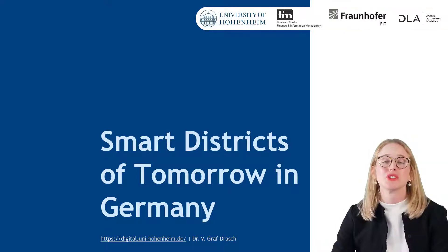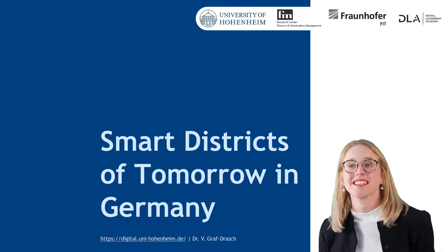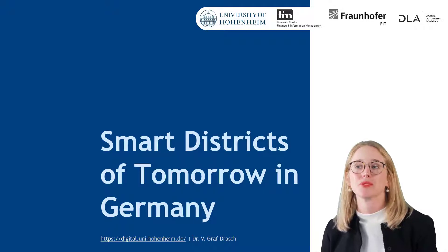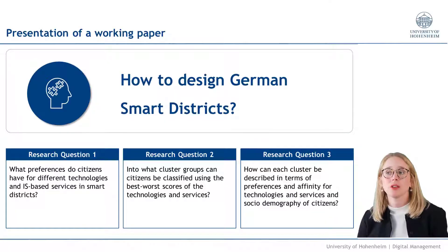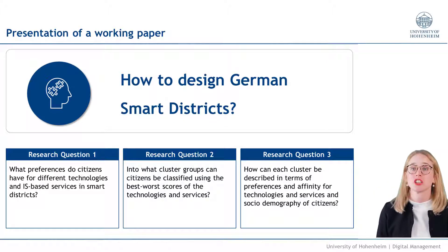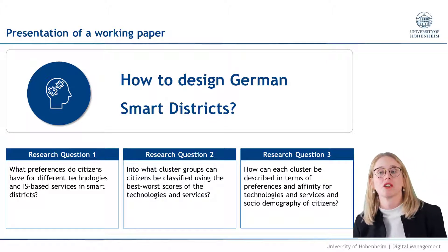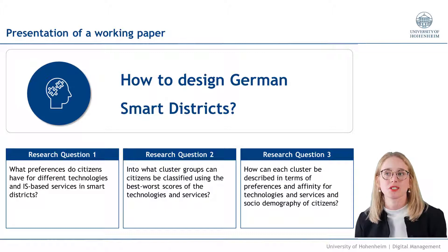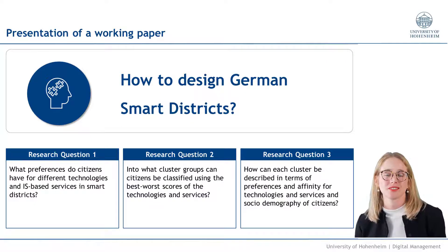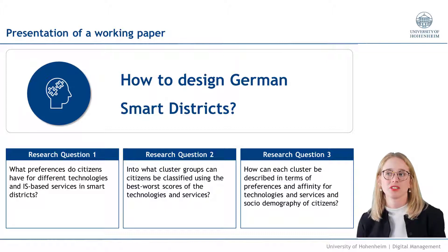Urban areas' huge carbon footprint can be significantly reduced by smart city and district concepts. To leverage the full environmental potential, smart urban areas, such as smart districts, must be designed for citizens and should be aligned with their preferences. However, citizens are underrepresented in research and in discussions about how to design smart cities.